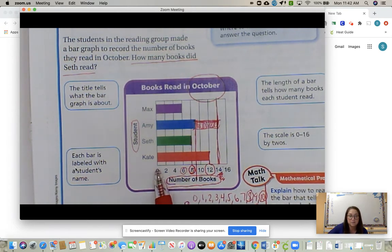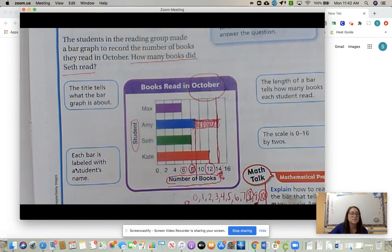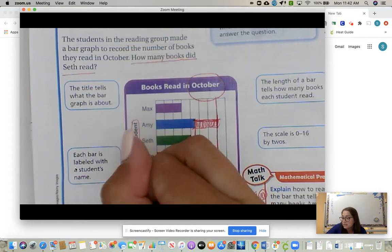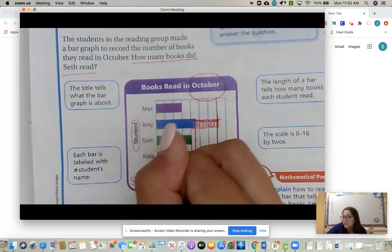Well, here we start at zero. We go zero, two, four, six, eight, 10, 12, 14, 16. So the scale is going by two.